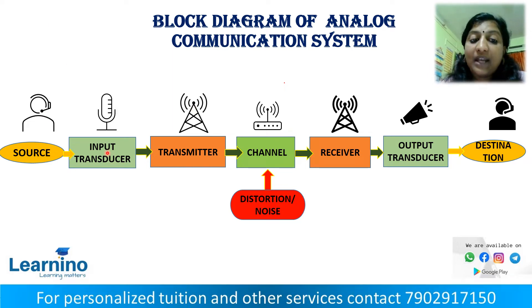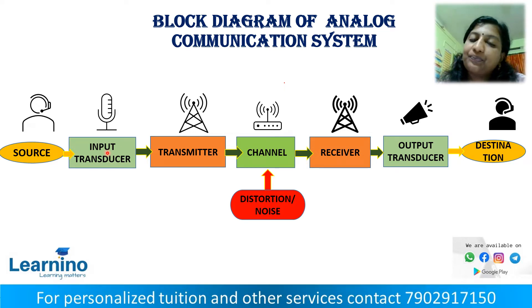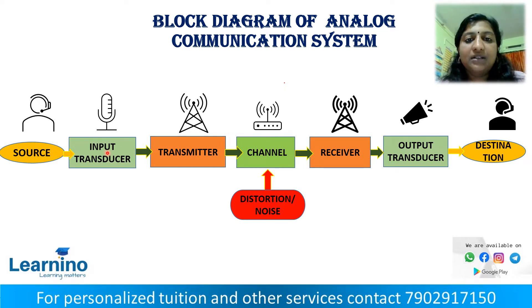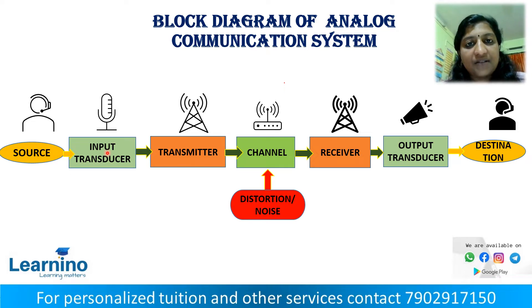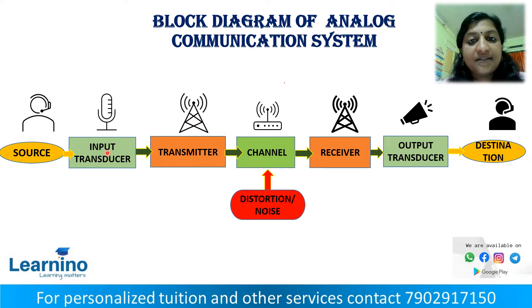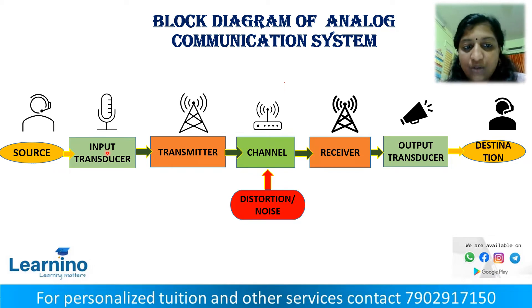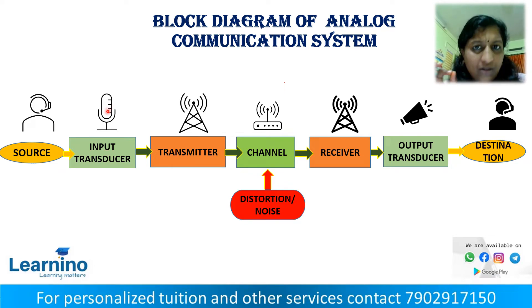Next, we have an input transducer. Now we have a basic block diagram with a transducer. This converts the physical signal to an electrical signal. A microphone is the best example.